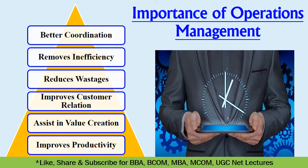The importance of operations management: number one is better coordination — operations management helps in improving coordination between various departments of the business organization, as well as between various factors of production like labor, land, technology, and capital. Second is removing inefficiency — the main reason for business failures is inefficiency in operations, and a successful operations management system helps the business organization identify and eliminate those inefficiencies. Third is wastage reduction — by following best methods in converting raw materials into goods and services, wastages can be reduced or eliminated.